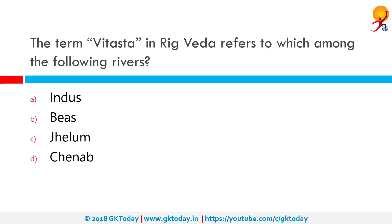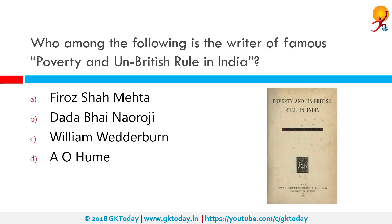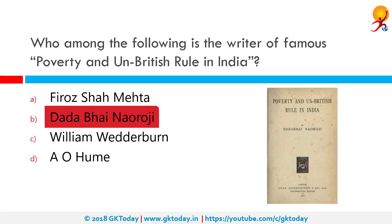The term Vitastha in the Rig Veda refers to which among the following rivers? The correct answer is Jhelum. Who among the following is the writer of the famous book Poverty and Un-British Rule in India? The correct answer is Dadabhai Naoroji. He published his book in 1901, and it brought attention to the draining of India's wealth into Britain.